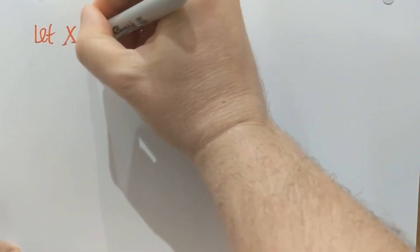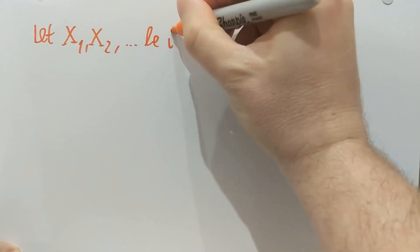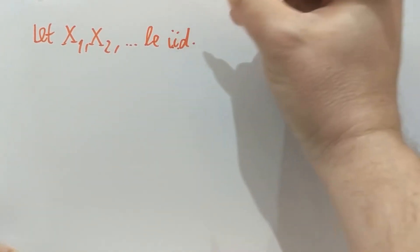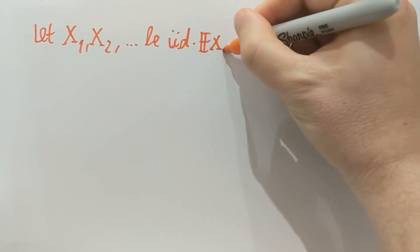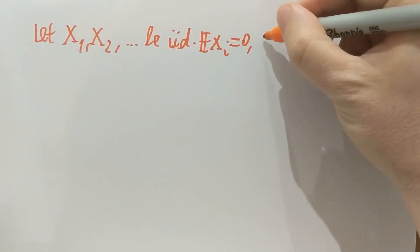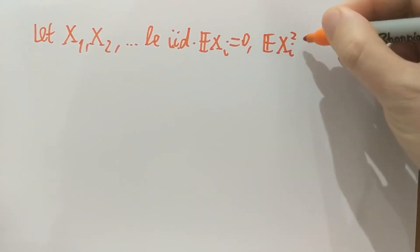Let X₁, X₂, and so on be iid, with a finite, actually a zero mean, let's assume zero mean, and finite variance. The variance and the second moment are the same if the mean is zero.